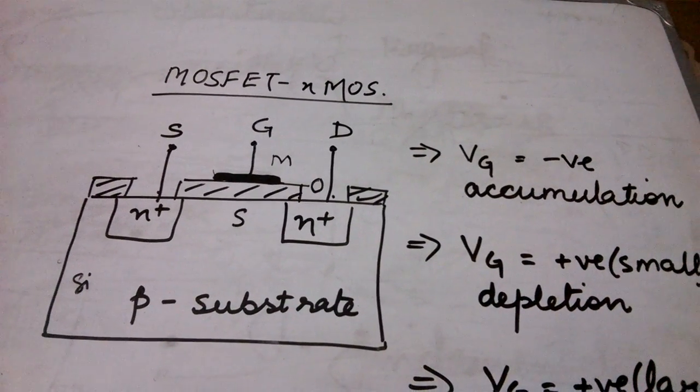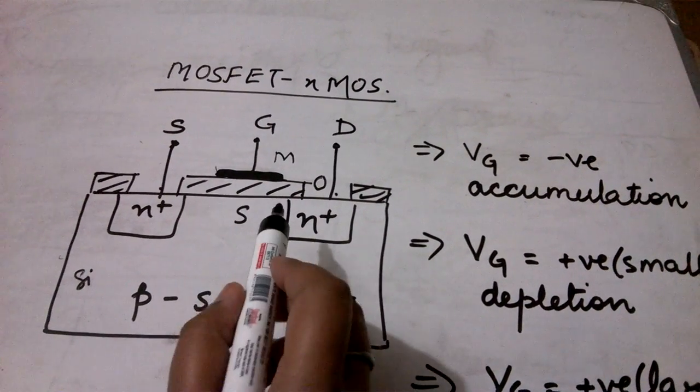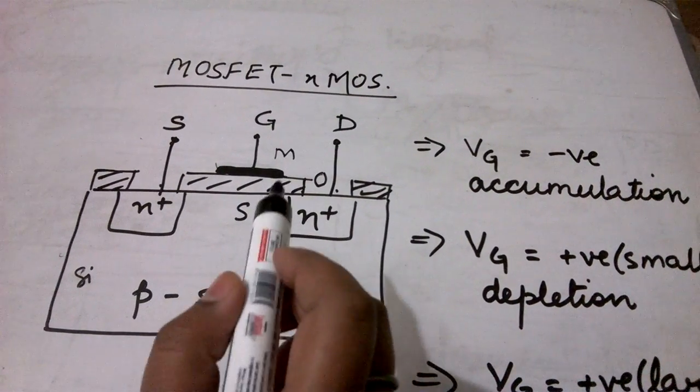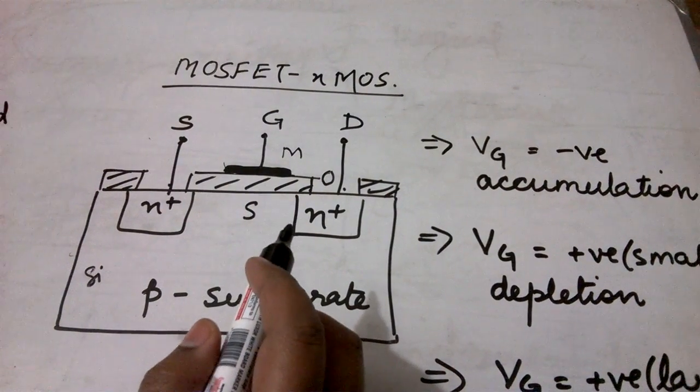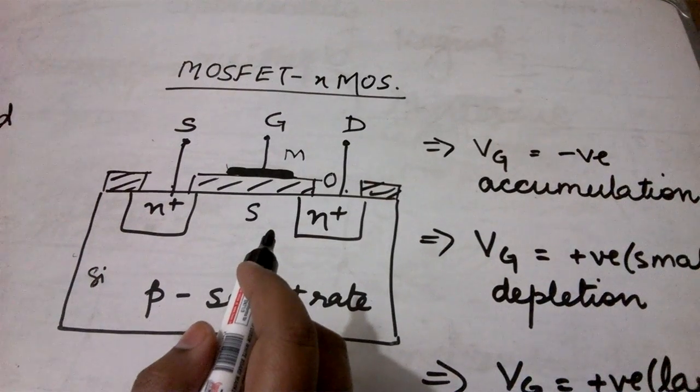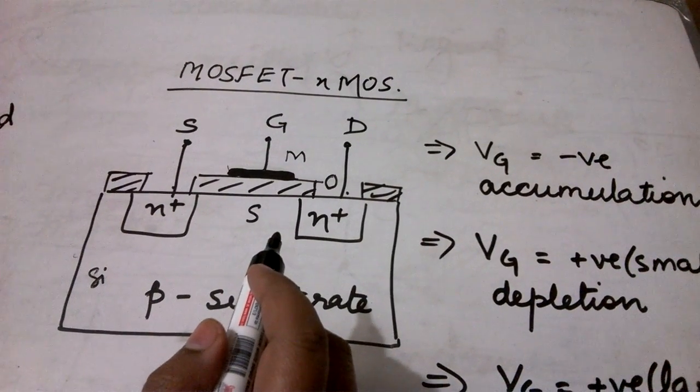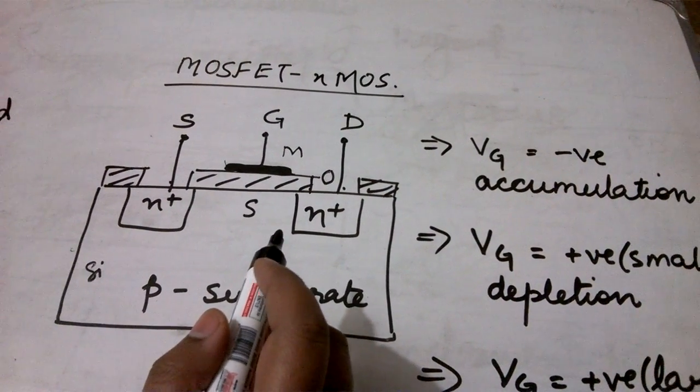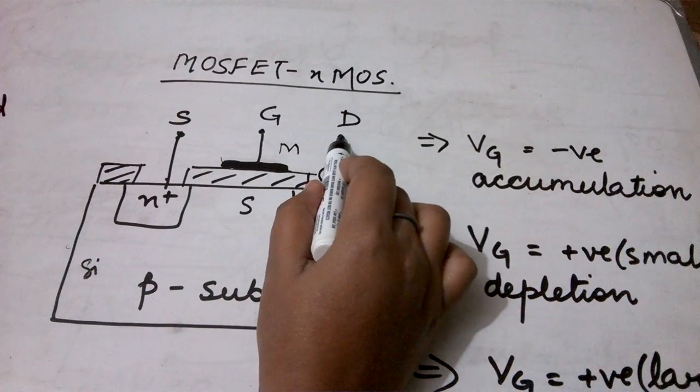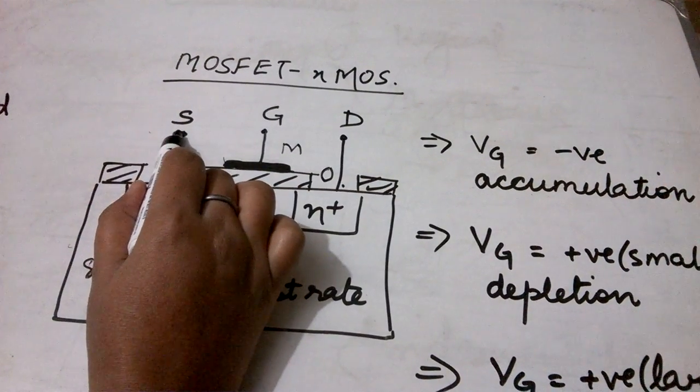Now what is field effect transistor? The conduction of current in this device takes place due to the effect of an electric field. Now how is the electric field established in this particular structure? When I apply a potential difference between the drain and the source terminal.